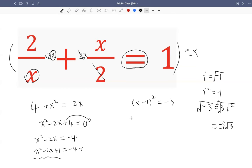So that means x minus 1, right? We square root both sides. Then we get x minus 1 equals positive, negative, i radical 3.